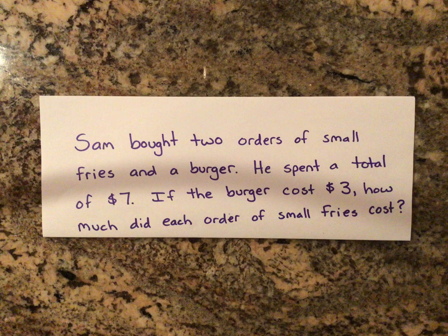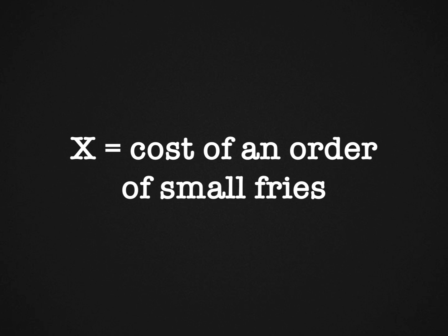Let's take a look at this problem. Sam bought two orders of small fries and a burger. He spent a total of $7. If the burger cost $3, how much did each order of small fries cost? Let's think about the unknown — what is it that we don't know? That will be our X. What I don't know is the cost of each order of small fries, so X is going to represent the cost of one order of small fries.